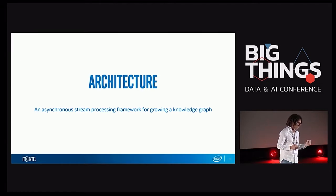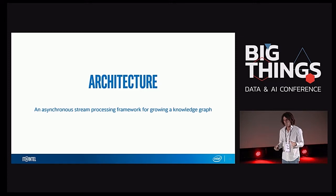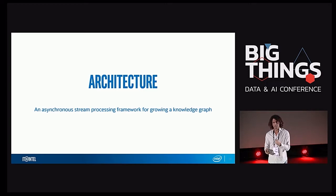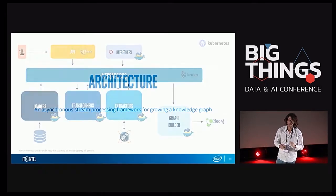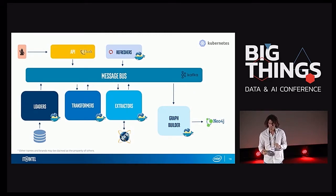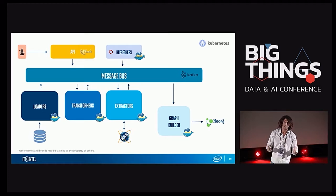We thought about what capabilities we would like this system to have. We identified four main capabilities we found crucial, and we created a component for each one. The architecture, by the way, is a microservice architecture. At a high level it's fairly simple — written on top of Kubernetes for easy deployment, with Docker files for each component, everything in a pod and easy to deploy.